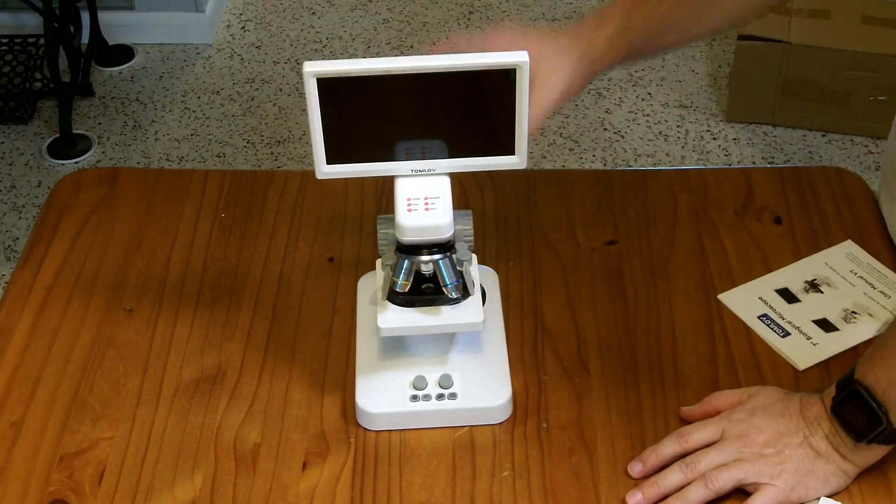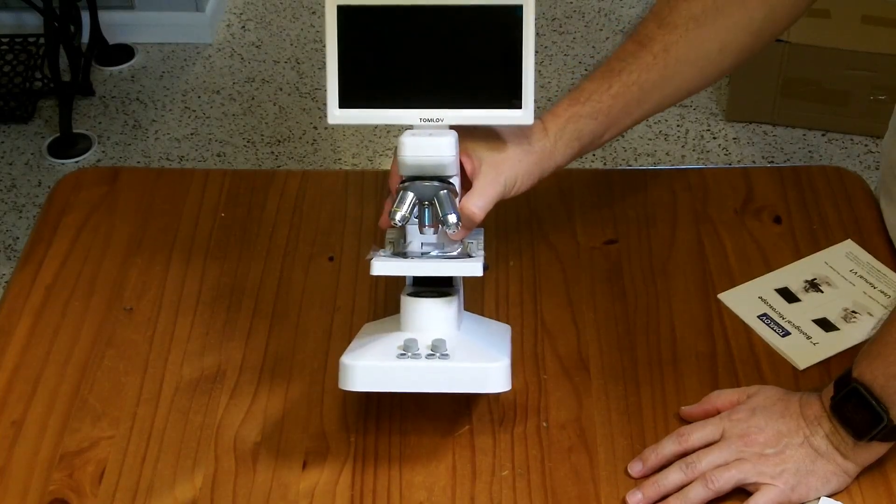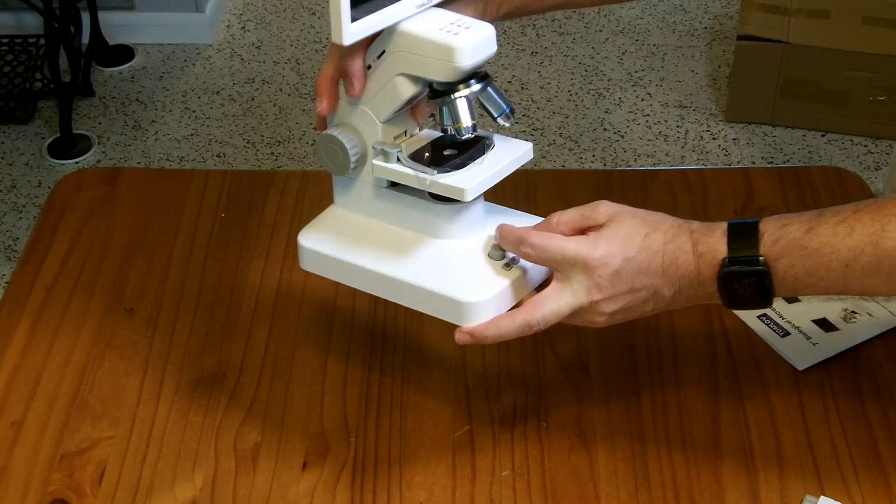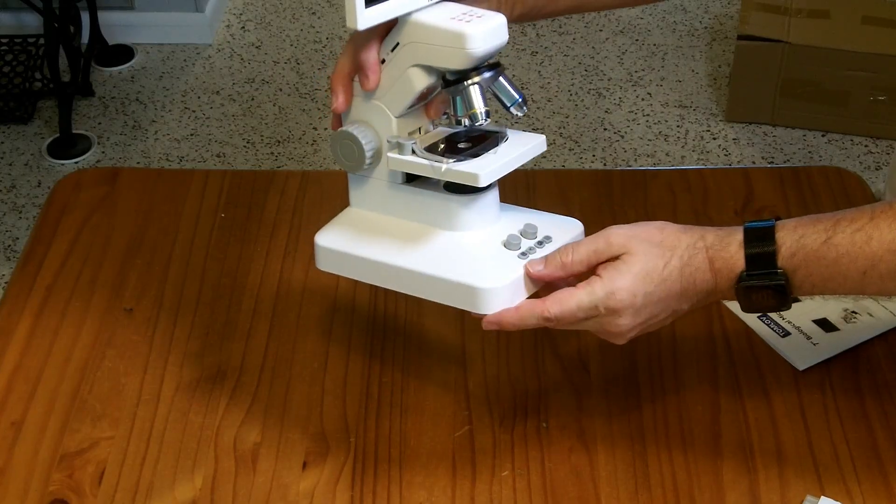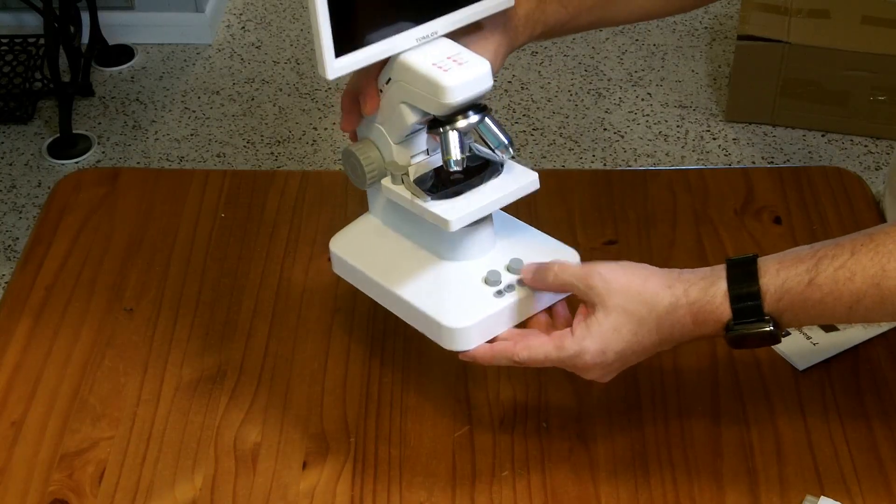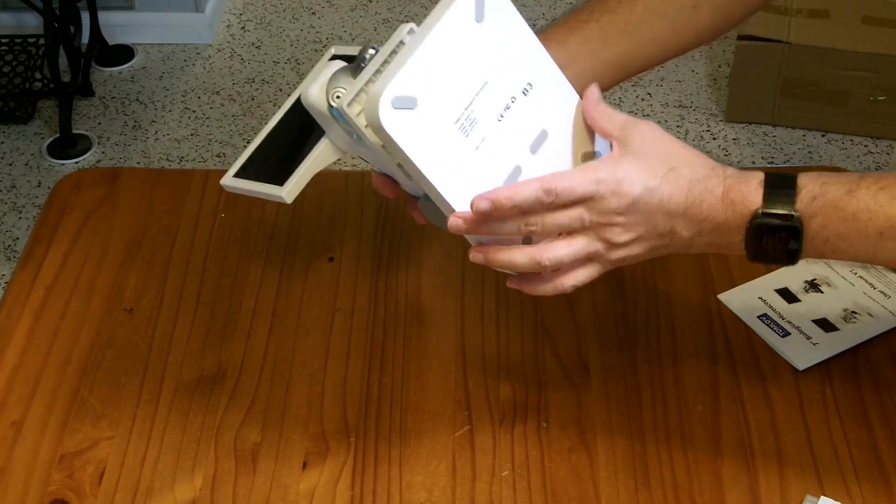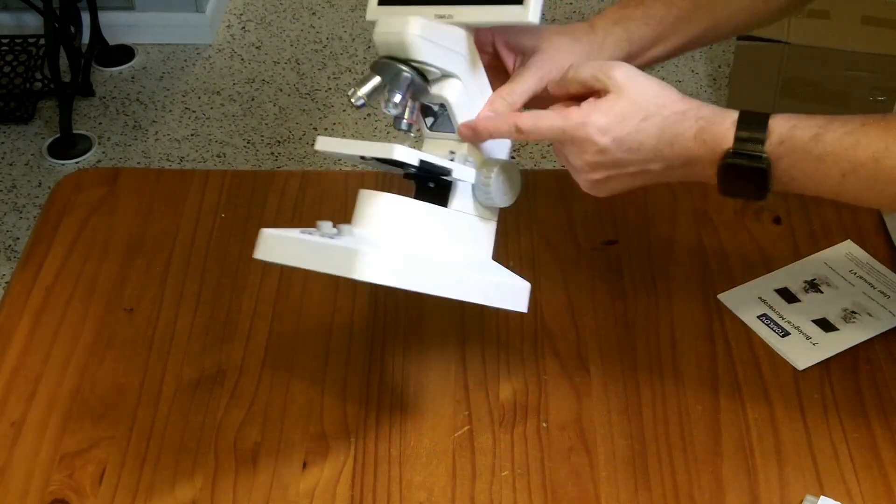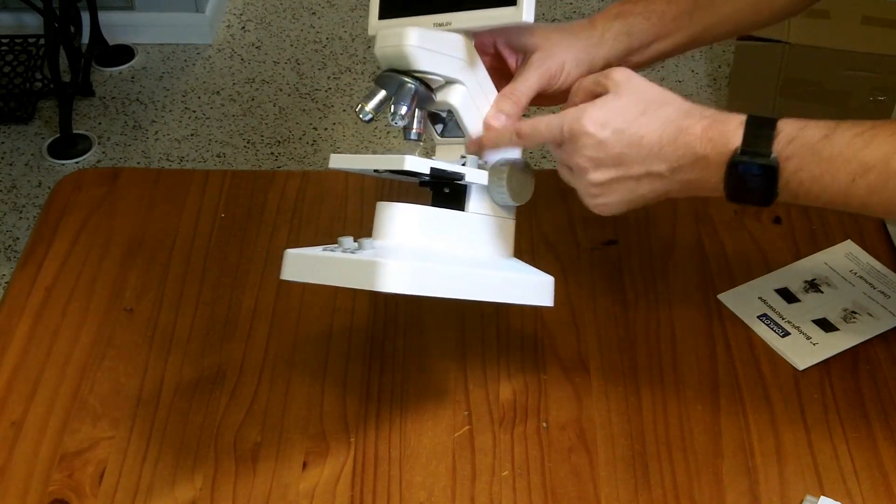According to the specifications this can do up to a 1200X magnification. We have some controls down here, looks like light level, something else, camera, take a picture, take a video, probably playback, and I don't know what that is. So we'll have to explore the user interface. But there is a bottom light, and there is a light up here for illuminating from the top.